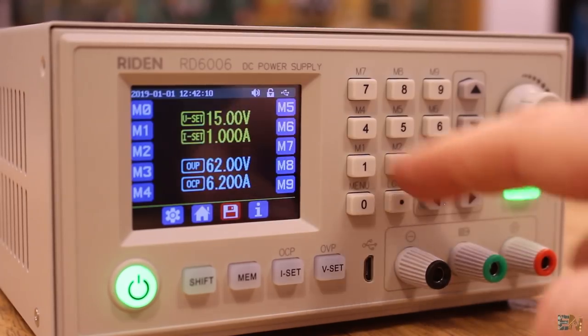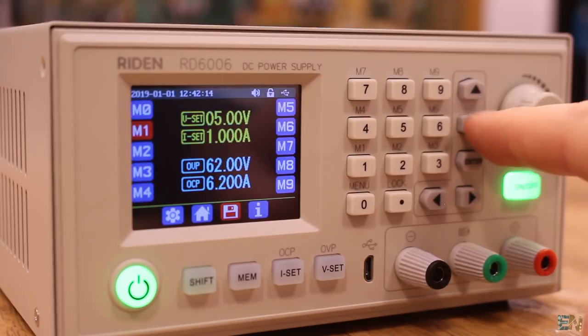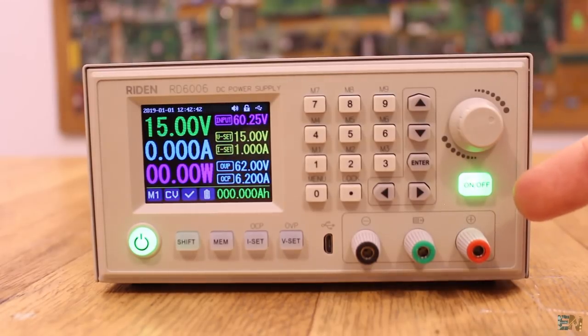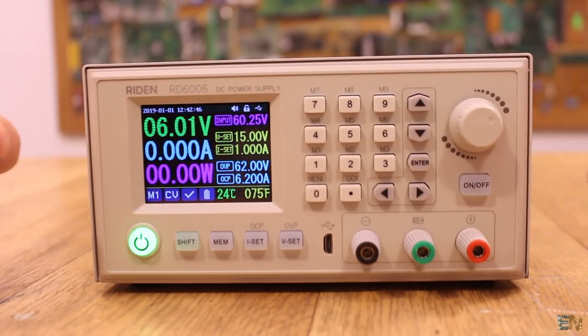Ok, so on the final menu page you can see all the memory for the preset values. And finally, to enable or disable the output, just press the on-off button and it will go green when the output is enabled or be turned off when the output is disabled.